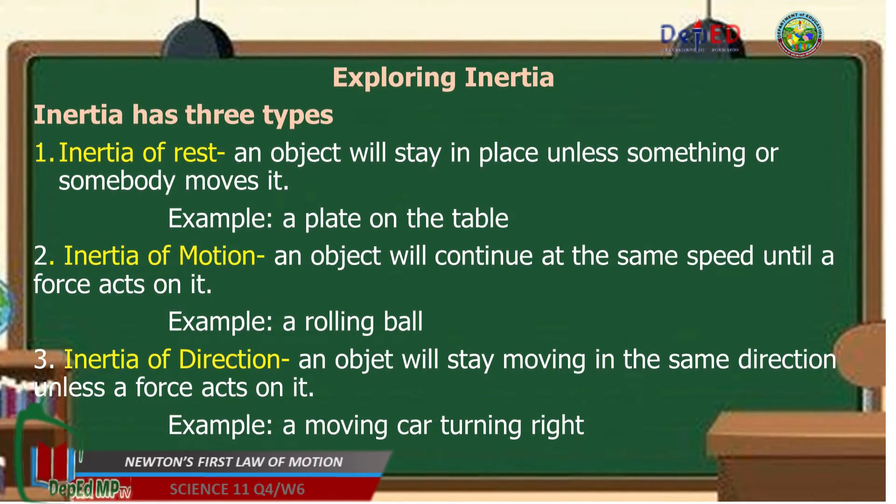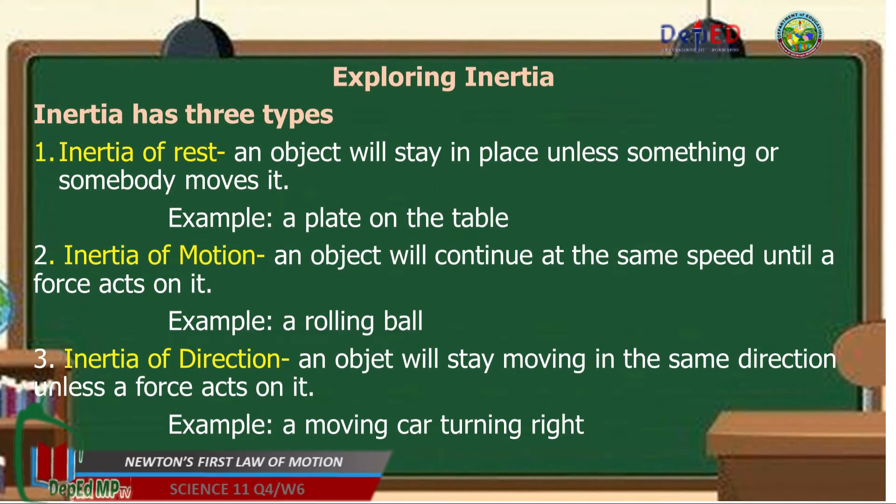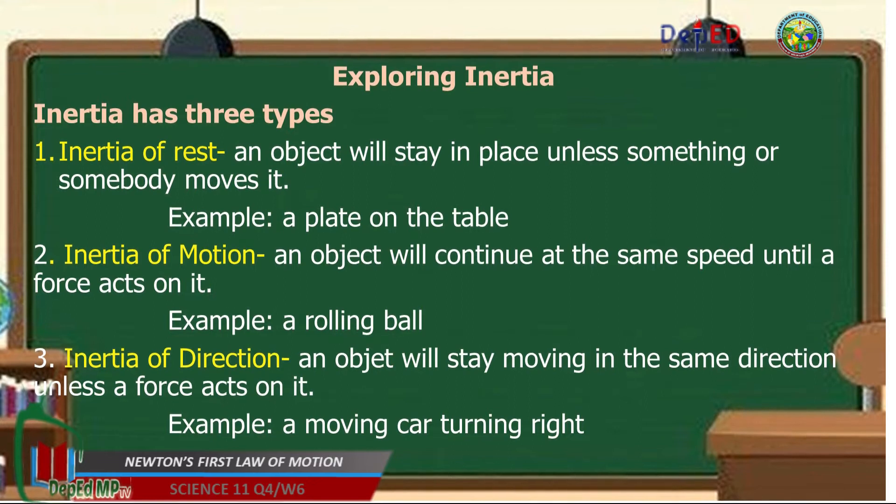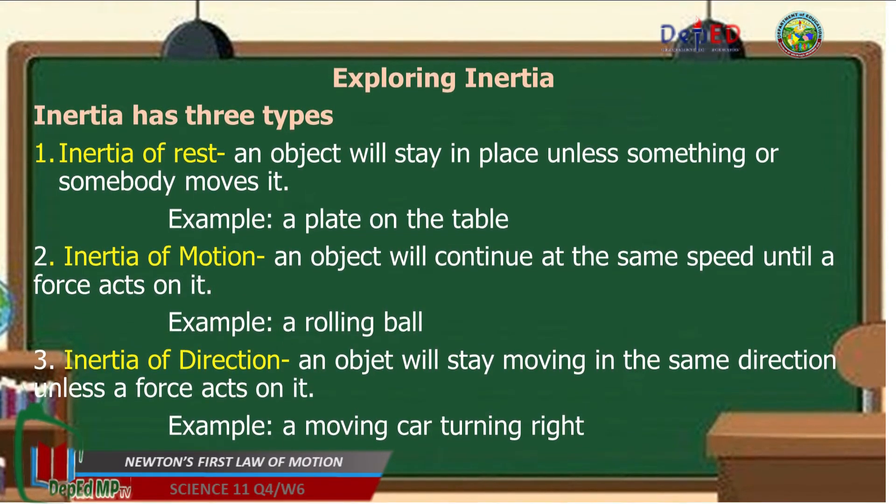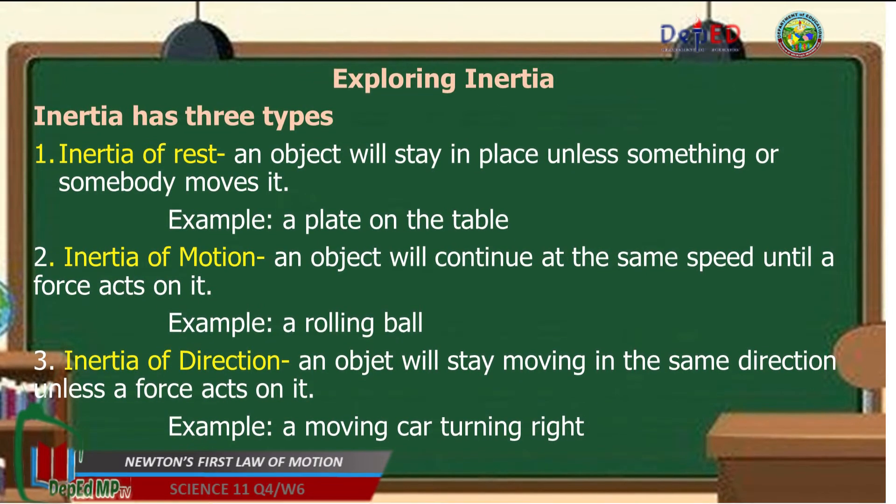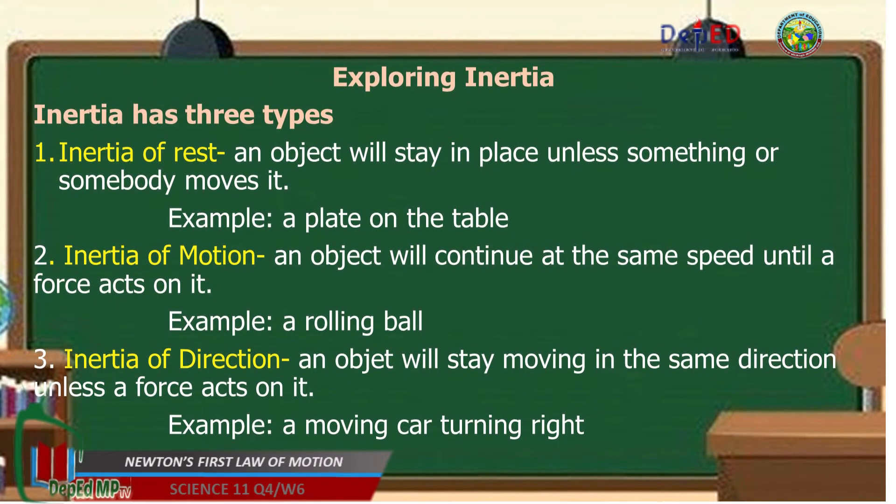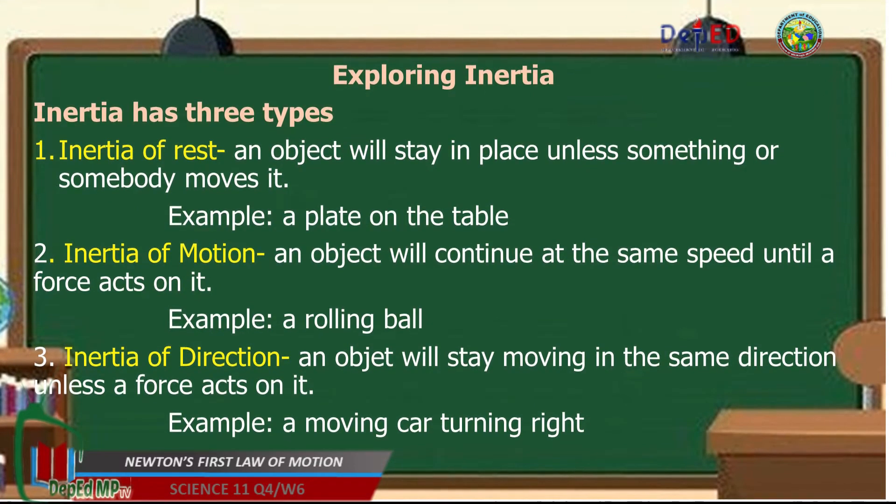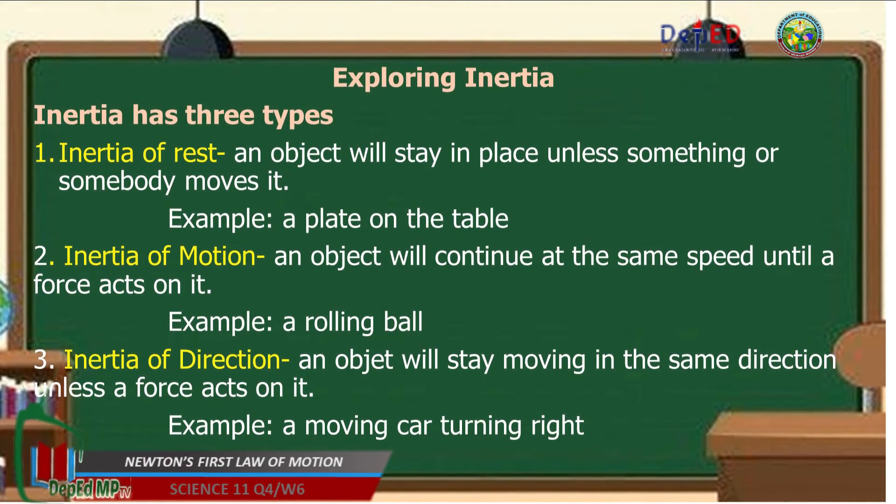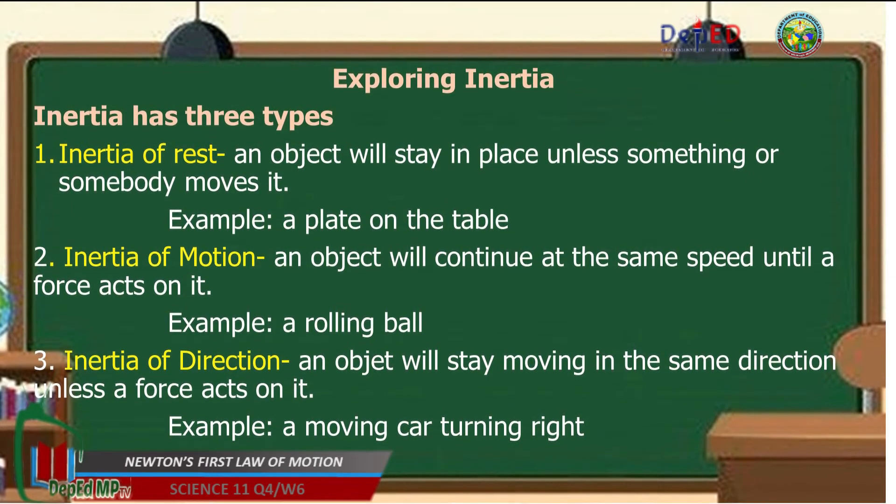Come on! Let us explore inertia. Inertia has three types. Number one, inertia of rest. An object will stay in place unless something or somebody moves it. Example, a plate on the table. Number two, inertia of motion. An object will continue at the same speed until a force acts on it. Example, a rolling ball. Number three, inertia of direction. An object will stay moving in the same direction unless a force acts on it. Example, a moving car turning right.